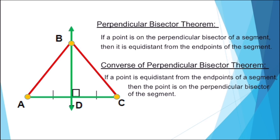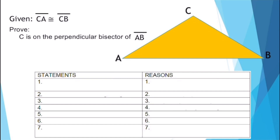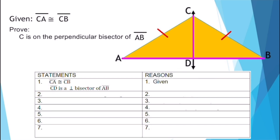We can also use triangle congruence to prove the converse. Given line segment CA is congruent to line segment CB, let's prove C is on the perpendicular bisector of line segment AB. Let's construct a line through C perpendicular to line segment AB, creating a midpoint on line segment AB — let's name it point D. For our first statement, line segment CA is congruent to line segment CB, and line segment CD is a perpendicular bisector of line segment AB. The reason is given.